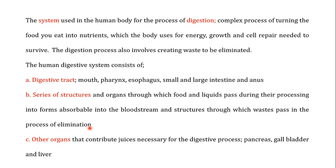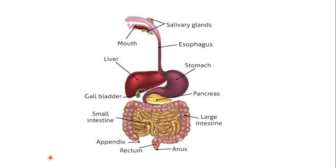The third sub-component of the human digestive system consists of the organs that contribute digestive juices, which are necessary for the process of digestion. The important organs in this category are the pancreas, the gallbladder, and the liver. I'll be having a detailed discussion on the function of each of these organs and how their juices contribute to the process of digestion.